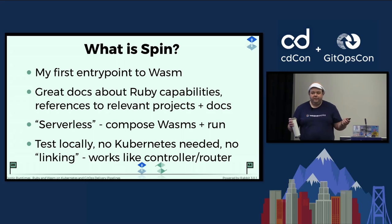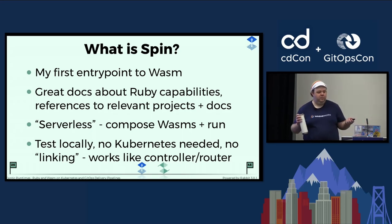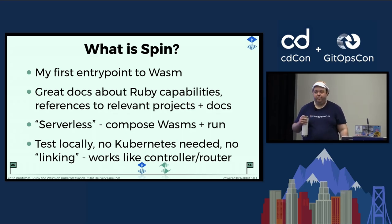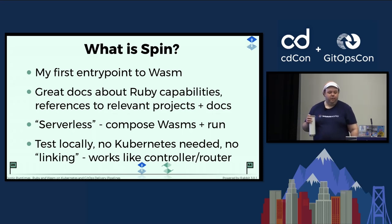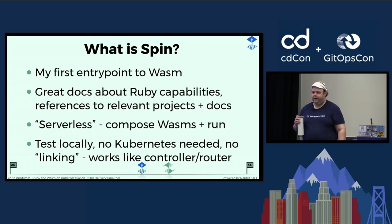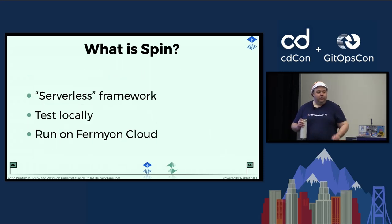What is Spin? This was my first entry point to Wasm. The marketing material says it's a serverless thing — you all know serverless is not really a thing, it runs somewhere. But in the Wasm context, serverless means you will shut down when you're done. I think that is where you get most of your performance gains from Wasm — by not running it when you're not using it. In Spin, you can test locally with no Kubernetes needed. You don't need to link your WASMs together. It works sort of like a controller or a router — you can map WebAssemblies to particular paths and call them from each other or from the website you serve up.